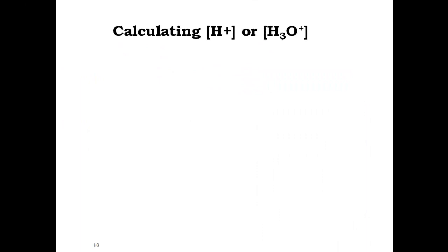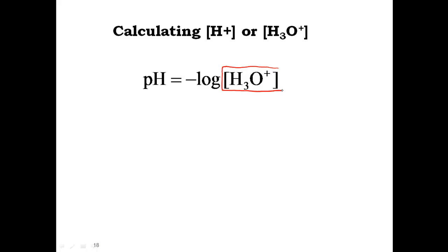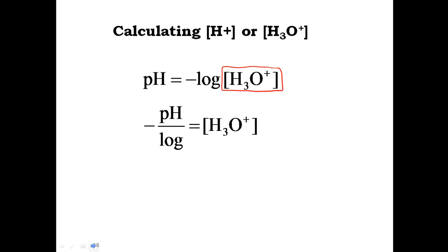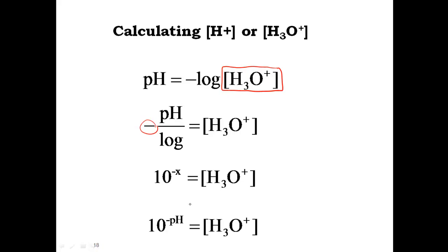How do we calculate hydronium ion concentration — that's the H₃O⁺? We start with the pH formula. Using a little algebra, we need to isolate the H₃O⁺ concentration. I brought over the negative and the log to the left-hand side. The only problem is your calculator can't divide by log, but it does have the 10 to the X button. I made it 10 to the negative X because of that negative. You'll plug in the pH value there, and that's how you go backwards and solve for the hydrogen ion concentration.